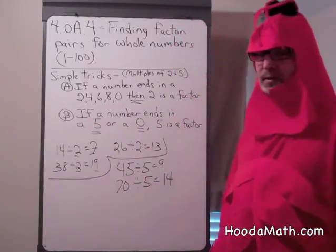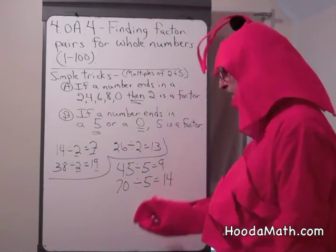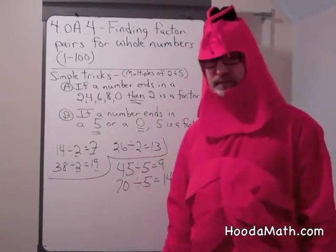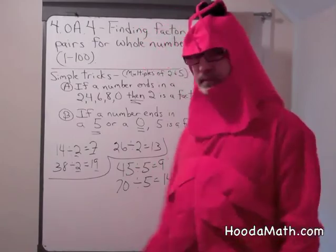There are many multiples of 5, but remember, they always end in 0 or 5. Why do I know that? Because I'm the Math Lobster.